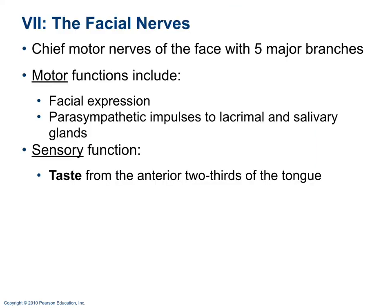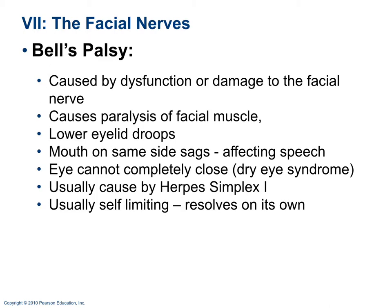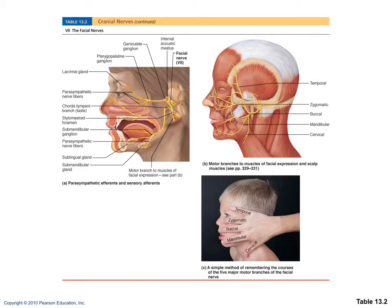Cranial nerve 7 is the facial nerve — both motor and sensory. Motor functions include facial expression and controlling the lacrimal (tear) and salivary glands. The sensory function covers taste to the anterior two-thirds of the tongue. Damage or paralysis results in Bell's palsy — paralysis of facial muscles, drooping of the eyelids, sagging of the mouth, dry eye syndrome, and inability to completely close the eyes. It is usually caused by herpes simplex 1 and is typically self-limiting.